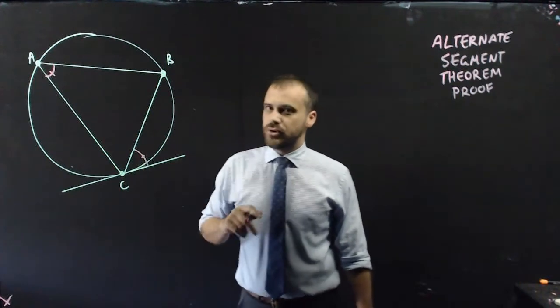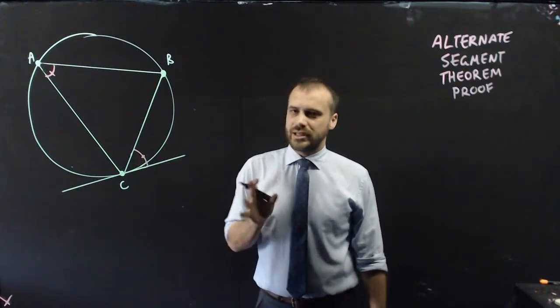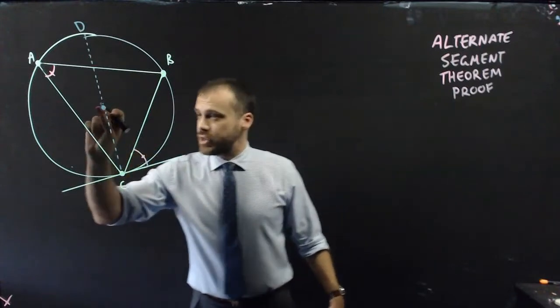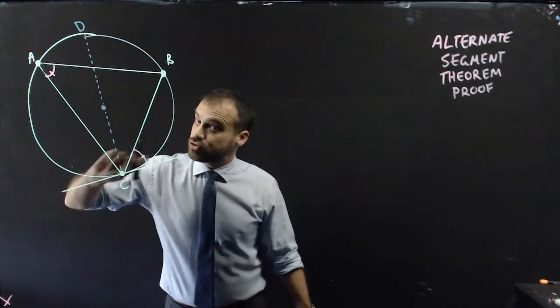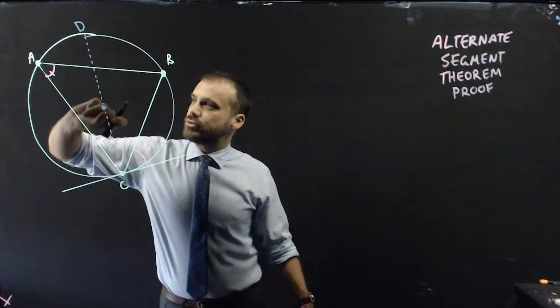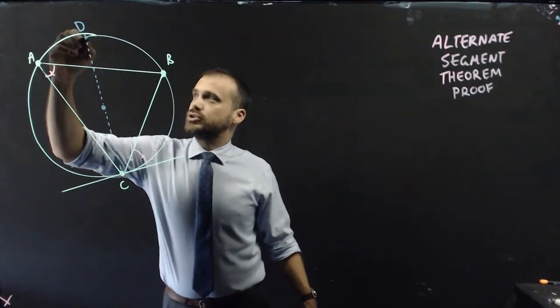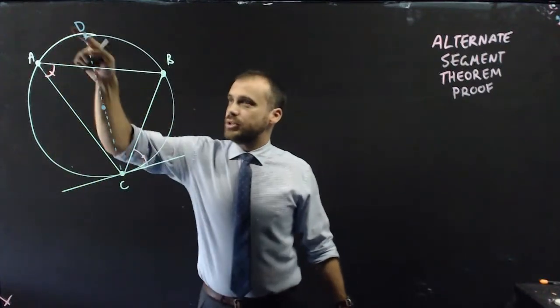So how are we going to prove that? Well, it takes a real leap here. It's going to be great. The first step is to find the center of our circle and construct a line from C through the center to the other side, and we'll just call that point D. And now I'm going to join D and B.